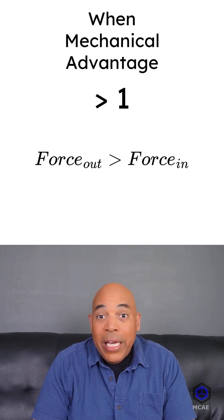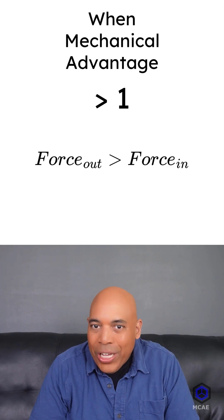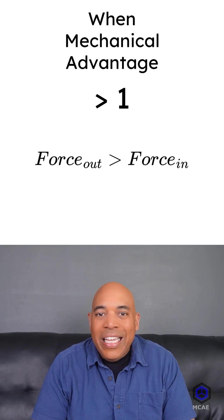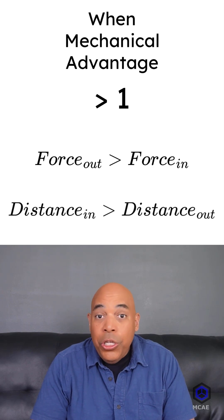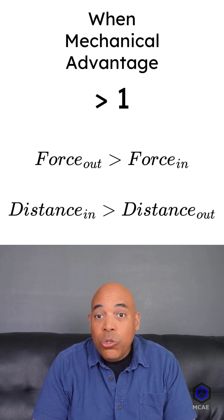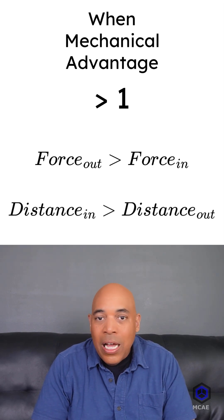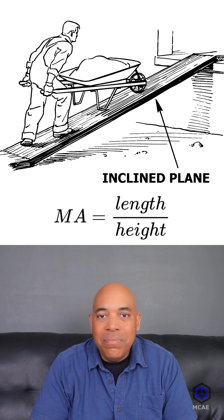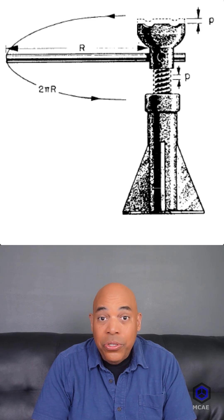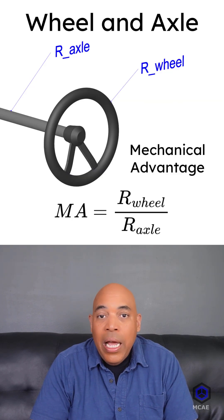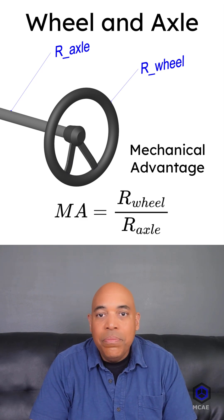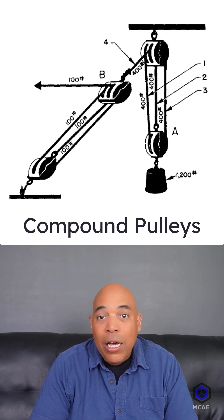If the mechanical advantage is greater than 1, your output force is greater than the input force. You are often trading distance for force, like in inclined planes, screws, a wheel and axle when the effort is applied to the wheel, and compound pulleys.